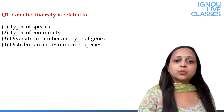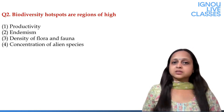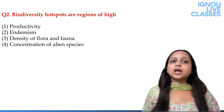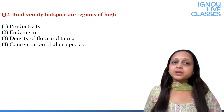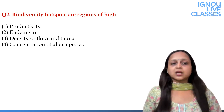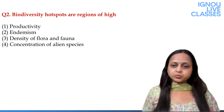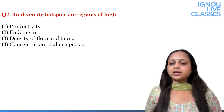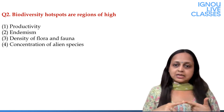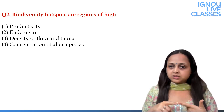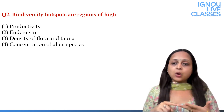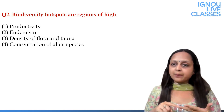So the answer is option 3. Moving on to question number 2: Biodiversity hotspots are the regions of high — options are: productivity, endemism, density of flora and fauna, or concentration of alien species. Biodiversity hotspots are areas having three main characteristics. First, these are areas rich in biodiversity with a variety of species. Second, the species found in biodiversity hotspots are endemic.